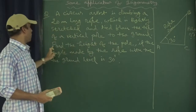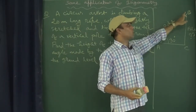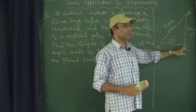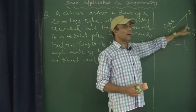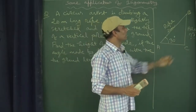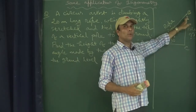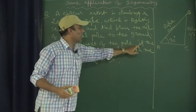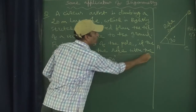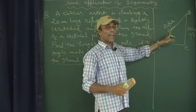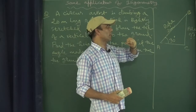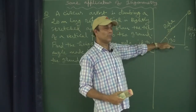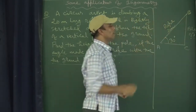This rope is tied from the top of a pole to the ground. We are asked to find the height of the pole, so let us assume BC is the height of the pole. Two things are given: the length of the rope AB is 20 meters, and the angle made by the rope with the ground level is 30 degrees.